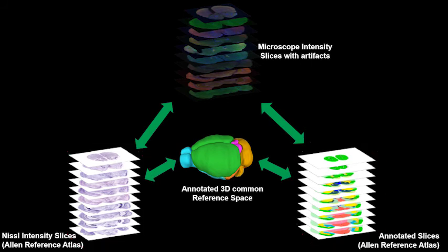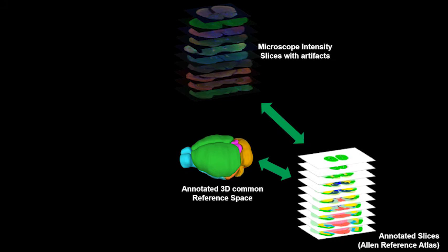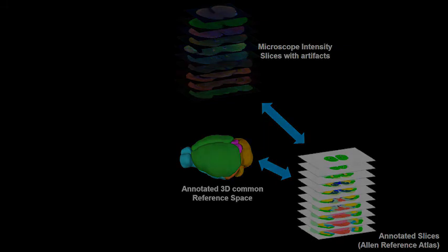However, alignment of microscopic and intensity slices require both to share a similar intensity profile which can be difficult to satisfy at times. This leaves us with only one approach where we first construct this 3D reference space by performing surface reconstruction using annotated atlas slices and then align the microscopic slices to these atlas slices using feature-based nonlinear registration.